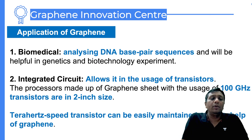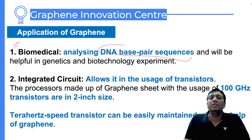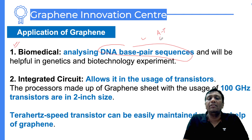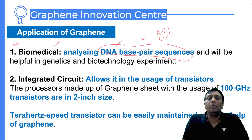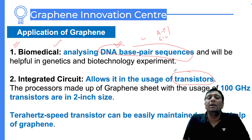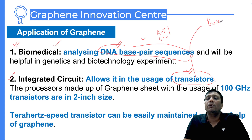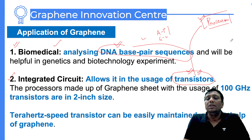There are various applications of graphene. In biomedical applications, if you want to do DNA base pair sequence observation - like AT, GC, GATA sequences - graphene can be used to analyze DNA base pair sequences. In the case of transistors used in computers as integrated circuits, people are using different types of processors, and processor quality depends on the transistors. Currently we are using silica-made transistors.